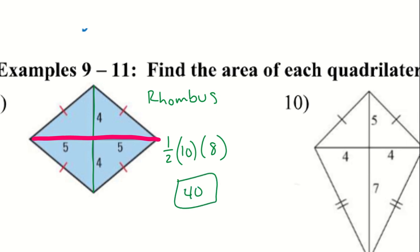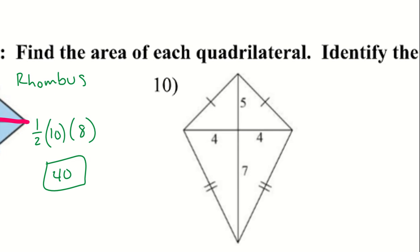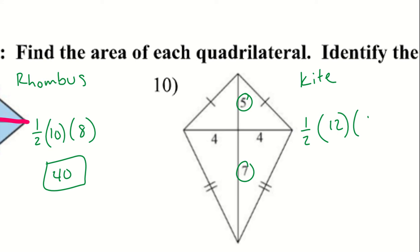Number 10 is a kite. Using the same formula — ½ × d₁ × d₂ — with diagonals of 12 and 8, the area is ½ × 12 × 8 = 48.